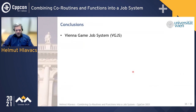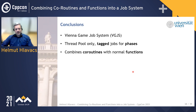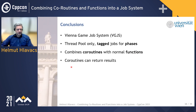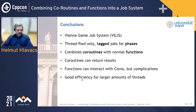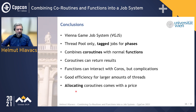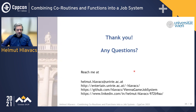In conclusion: I presented the Vienna Game Job System — a thread-pool-only job system where you can use tagged jobs for phases, combine coroutines with normal functions, and coroutines can return results. Functions can interact with coroutines but there are complications as we've seen. It shows good efficiency for large numbers of threads, but if you continuously create coroutines then high efficiency is difficult. If you can live with lower efficiency, coroutines can be very efficient — allocating coroutines comes with a price. Thank you for your attention; if you have any questions please ask, and feel free to drop me an email anytime.